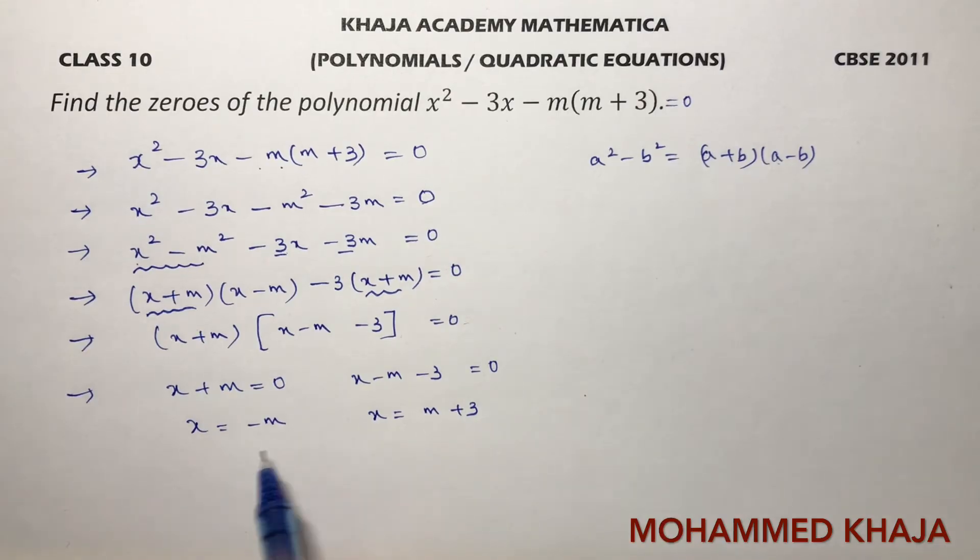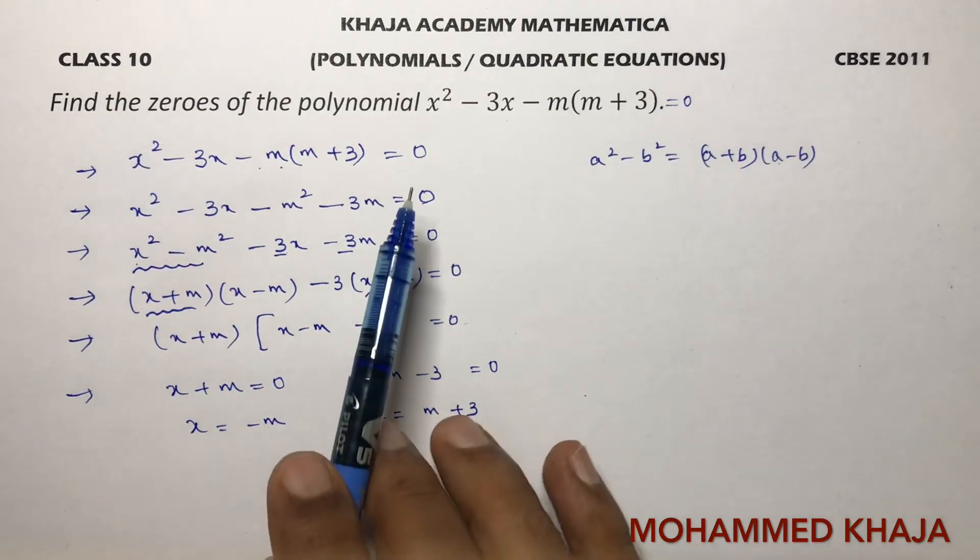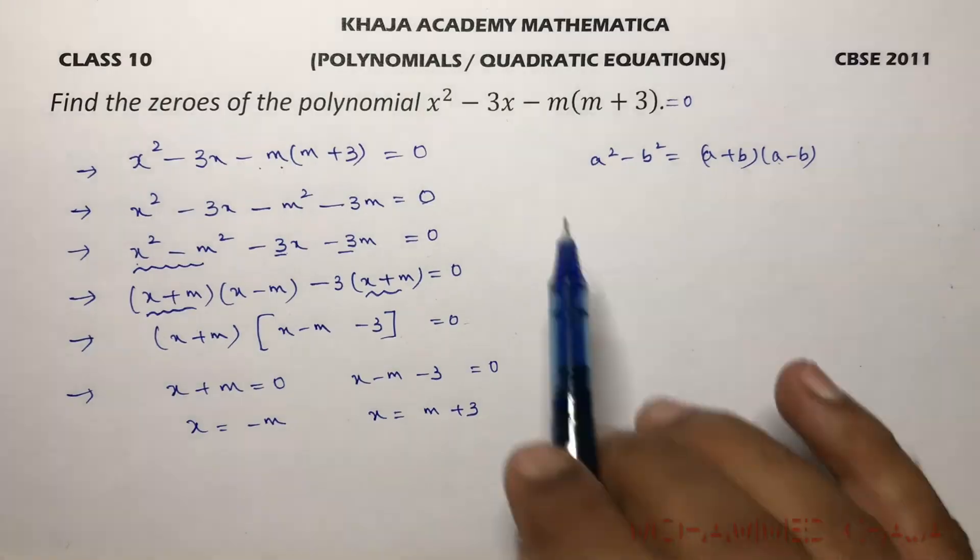x = -m and x = m + 3 are the two zeros of the polynomial.